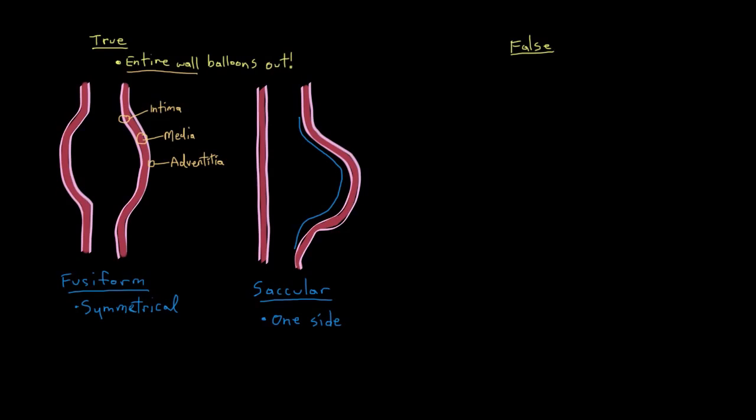Good. So those are the true aneurysms. Fusiform and saccular. And now we're going to skip over to the other type of aneurysms. The false aneurysm.